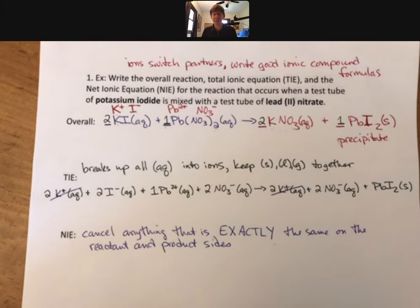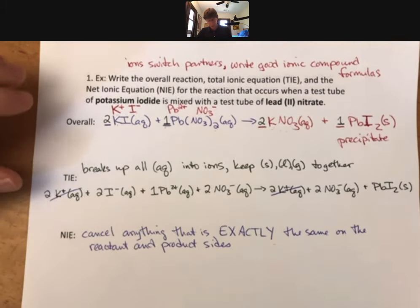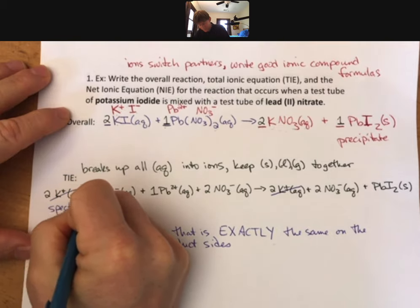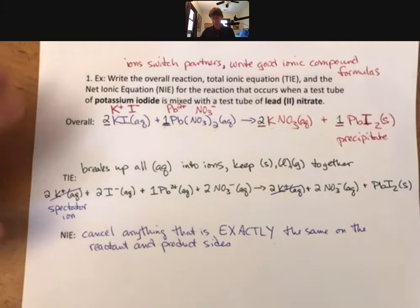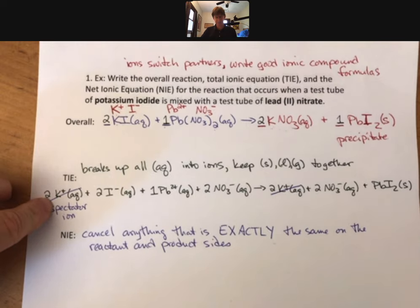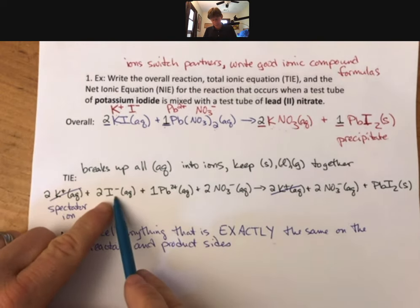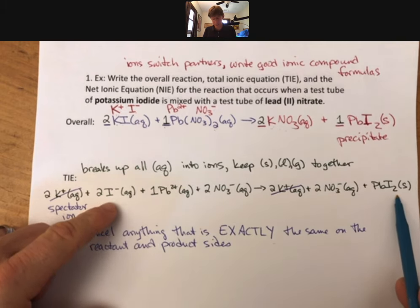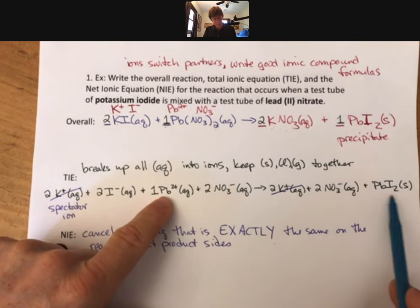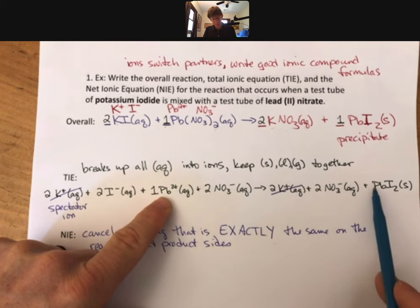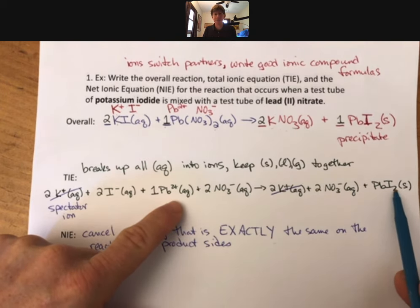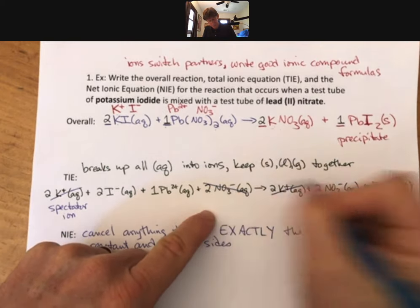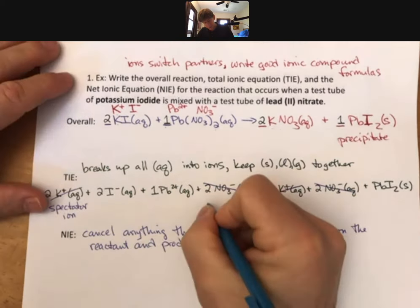So for example, 2K+ aqueous, 2K+ aqueous - cancel it out. Because, and the name for things that you cancel here, they are spectator ions. So that is, K+ is a spectator ion. I-, 2I-, I don't have a 2I- over here, so I cannot cancel it out. Pb2+ aqueous? Nope, no Pb2+ aqueous on the other side. 2 nitrates? Yep. Also a spectator ion.